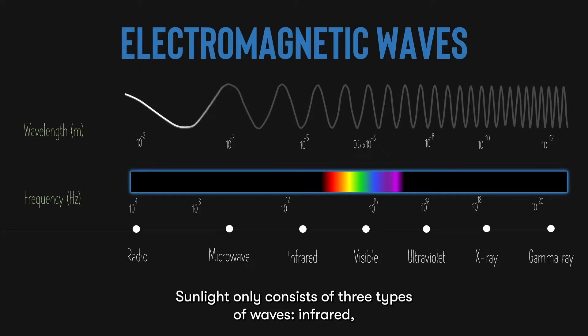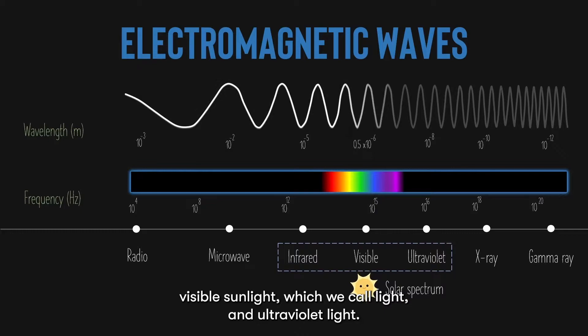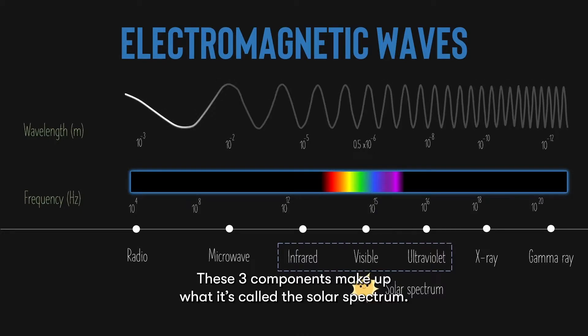Sunlight only consist of three types of waves: infrared, visible sunlight which we call light, and ultraviolet light. These three components make up what is called the solar spectrum.